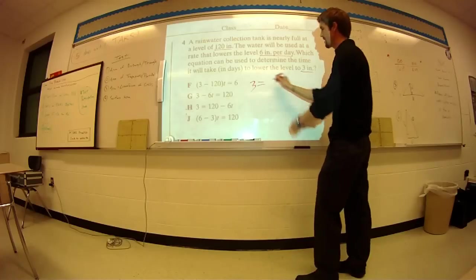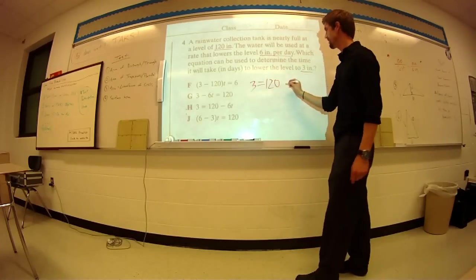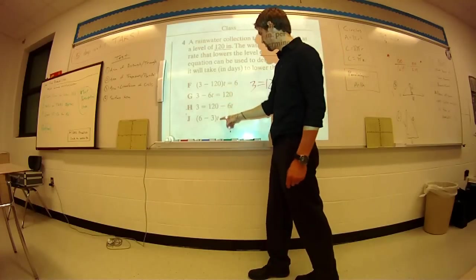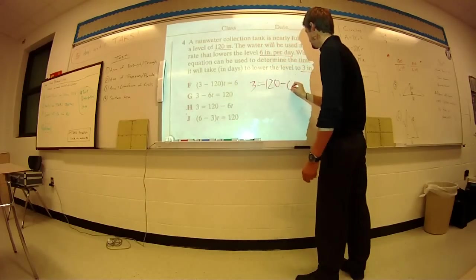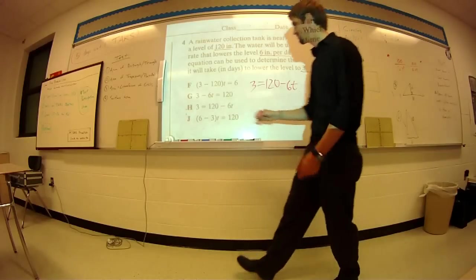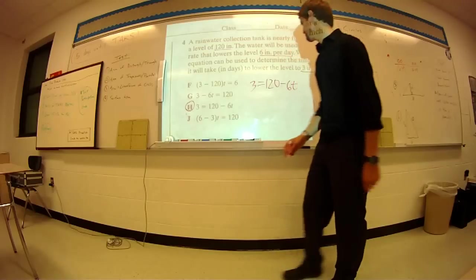So we're trying to figure out when is it going to be three inches? Well, what does it start at? It starts at 120. It lowers. It's going down at six inches per day. So we're taking away six inches times T. So three equals 120 minus 6T. So your correct answer is going to be H.